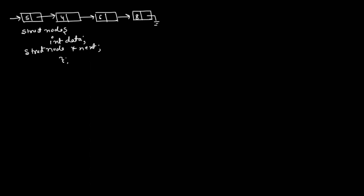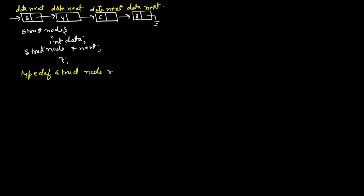The struct definition is struct node with node star next. We also define typedef struct node as node, which means whenever we need to write struct node, we can simply write node. If we need to initialize a variable of type node, we just write node followed by the variable name.